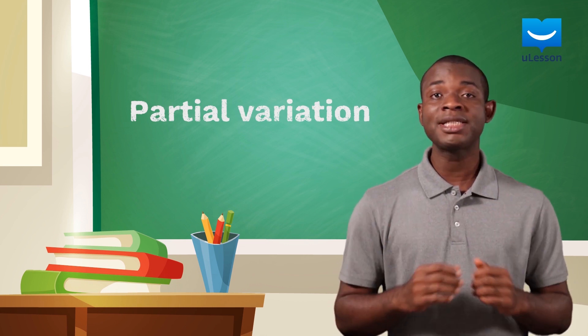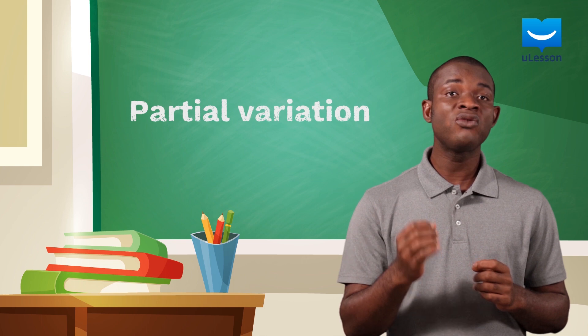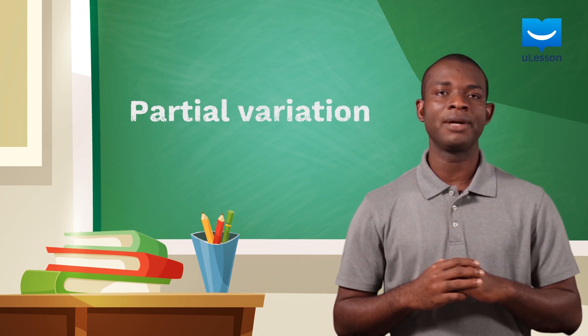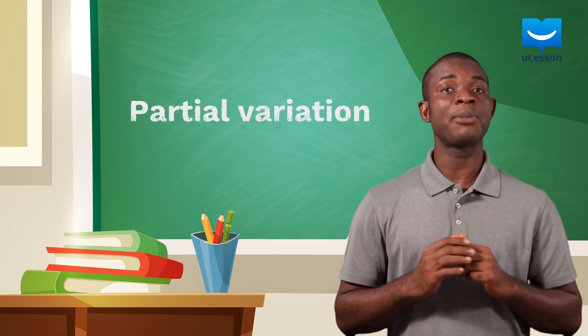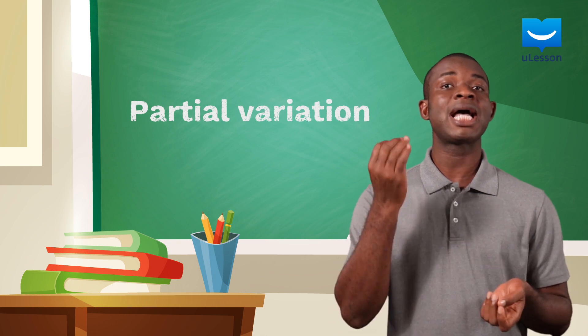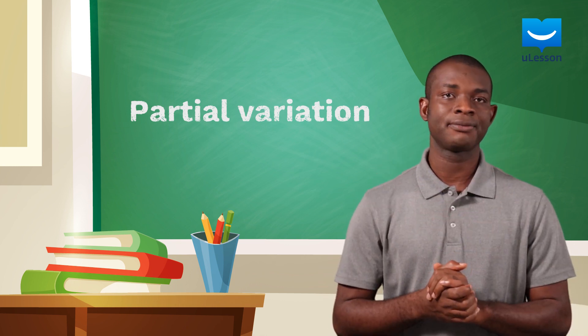Remember that partial variation involves two variables related by a formula. This is the rarest type of variation, but it is just as important as the other types of variations.